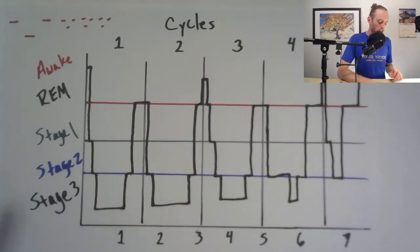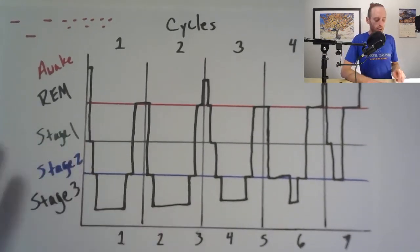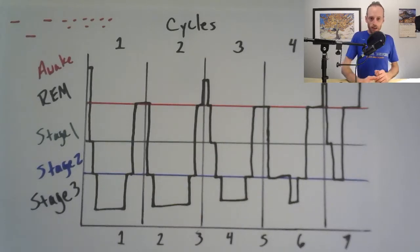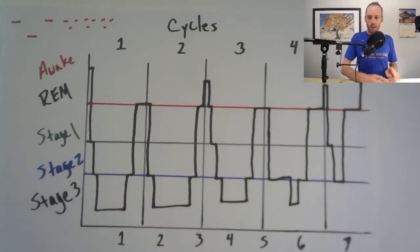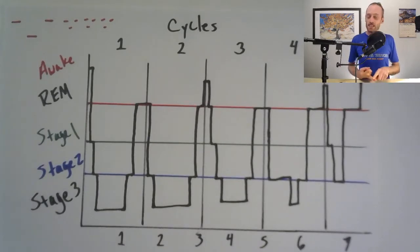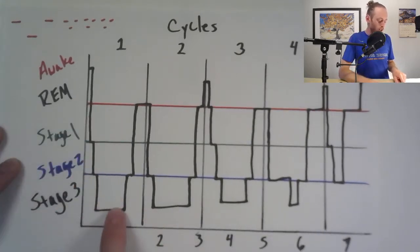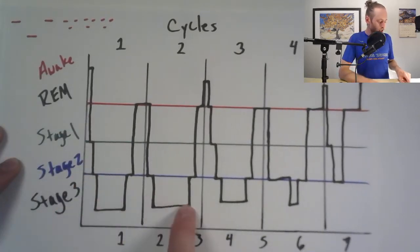When we're looking at non-REM sleep, a good way to conceptualize what is happening down here is that your body is recovering. Especially down in stage three, we're getting some good testosterone release, some HGH release, and good protein synthesis as well. Right away when we go to sleep, the first two cycles are getting really good deep stage three sleep.